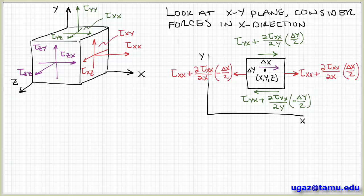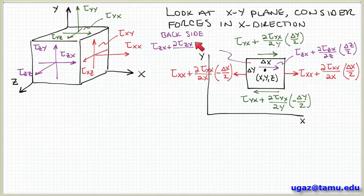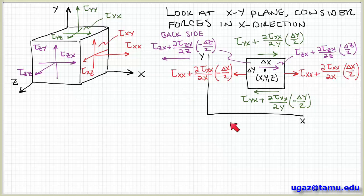I can also think about the front face, where the normal vector is in the z direction and I'm talking about forces in the x direction. So I have tau zx plus the rate of change of tau zx with respect to z times delta z over 2. And then the back side would be tau zx plus the partial derivative of tau zx with respect to z times minus delta z over 2. These are all the components associated with a force acting in the x direction on this control volume.